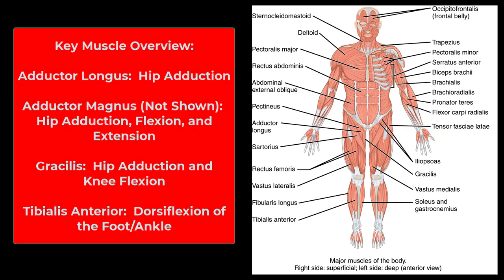Next are the adductors or groin muscles. The adductor longus is the longest adductor, involved in hip adduction. The adductor magnus is the largest — so large it's involved in both flexion and extension of the hip due to its many attachment points, plus hip adduction. The gracilis is the most medial muscle of the thigh, involved in adduction and also some flexion. The tibialis anterior in the shin performs dorsiflexion — picking up your toes.